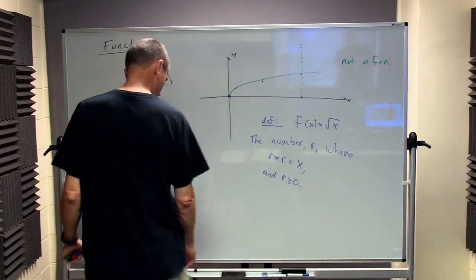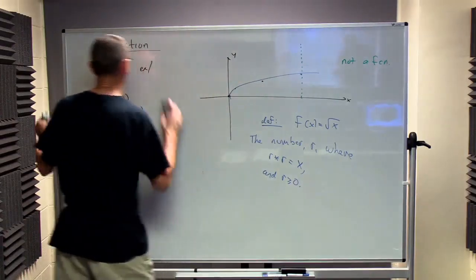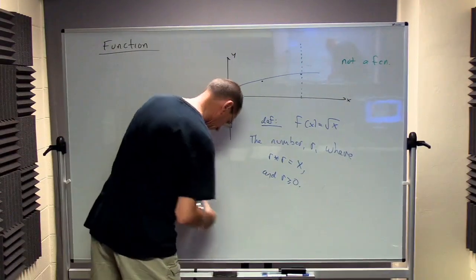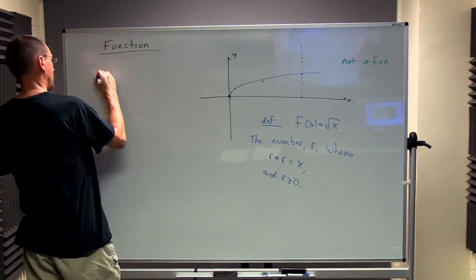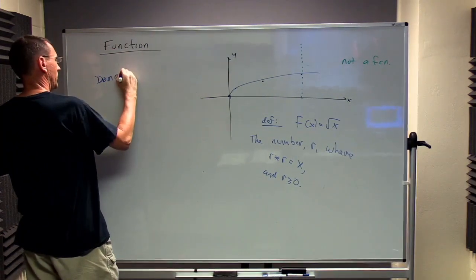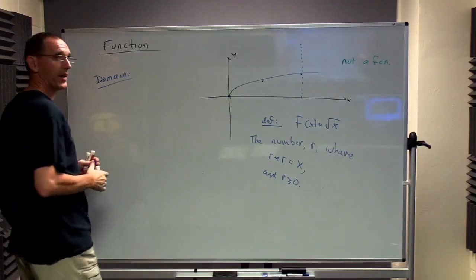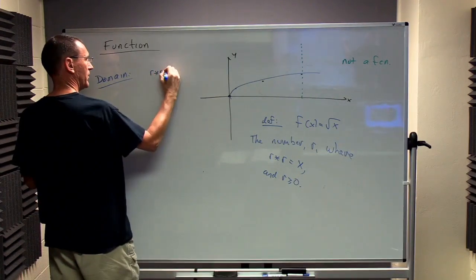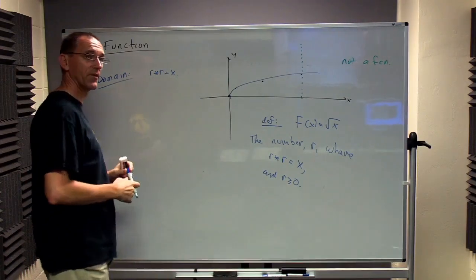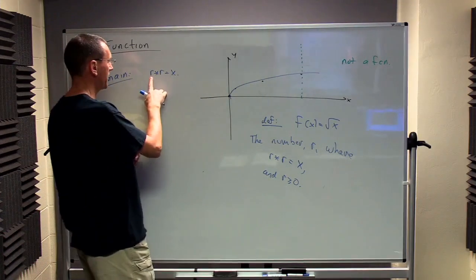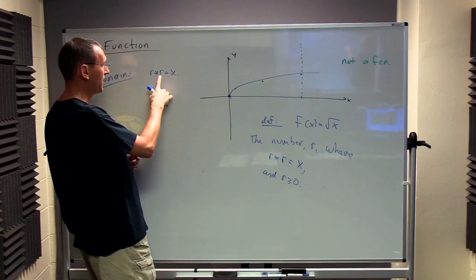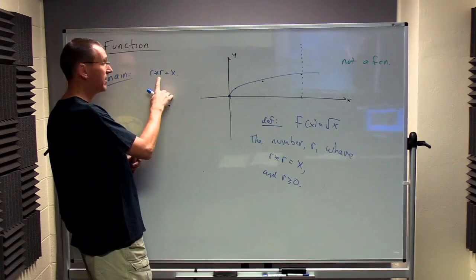Now, what's the domain and range of this thing? So if you give me the value X, I want to find a number R times R that gives me that. Now here's the problem, is that if this is a positive or a negative number, either way, it's always going to be a positive number that comes out of this.